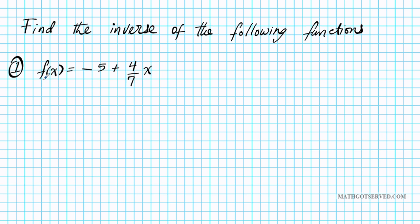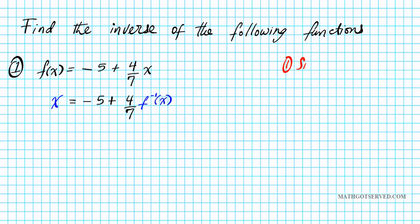To find the inverse, we're going to switch the output into the input and the input into the inverse of the output. So f of x becomes x, and x now becomes f to the negative one of x. Step one is to switch f of x with x and x with the inverse, and step two is to solve for f inverse.